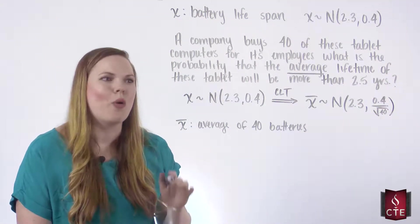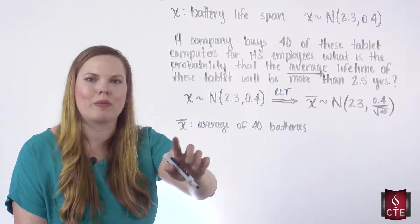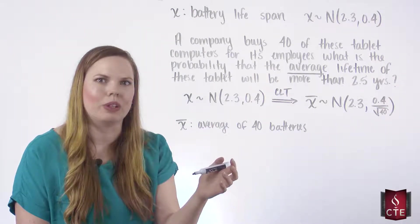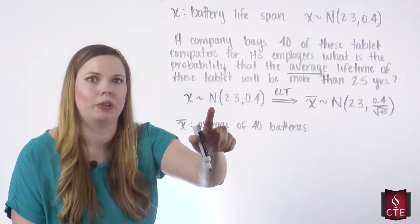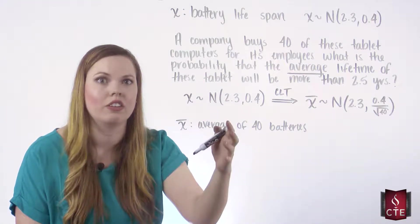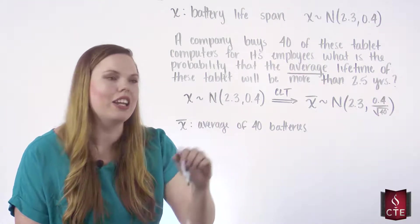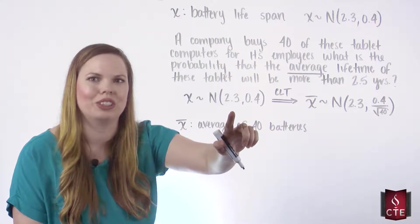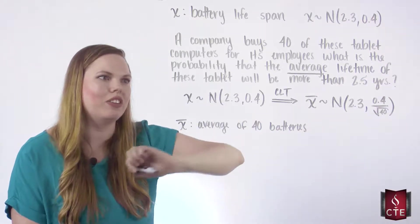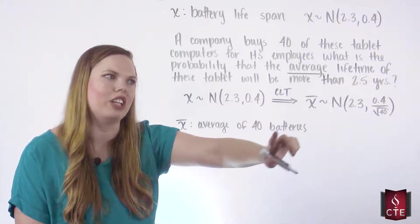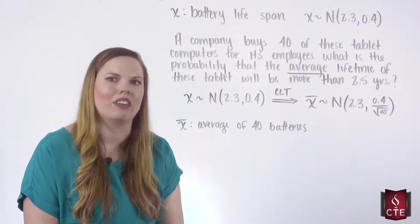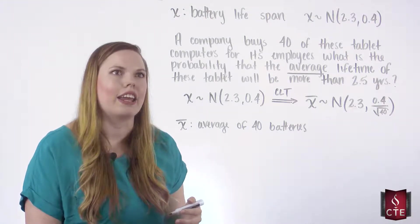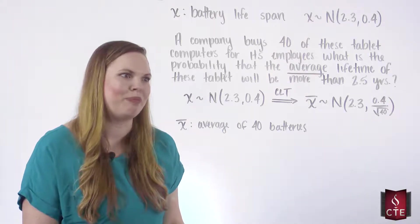By the central limit theorem, our new variable — the average of these — is still normally distributed because X was normally distributed and because N is more than 30. It has the same mean as our original distribution and a standard deviation of our original sigma divided by the square root of N, where N is the number of laptops bought: 40.